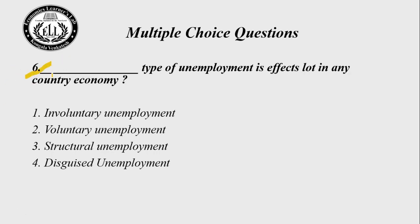Question 6 — the last question: Which type of unemployment affects a country's economy the most? Choice 1 — involuntary unemployment; Choice 2 — voluntary unemployment; Choice 3 — structural unemployment; Choice 4 — disguised unemployment. Structural unemployment affects the economy the most, so the right answer is Choice 3.